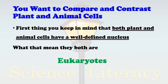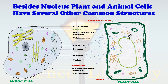Now, when comparing plant and animal cells, the first thing to keep in mind is that both plant and animal cells have a well-defined nucleus, which means they are both eukaryotic organisms. Here you can see two cells — one is an animal cell and the other is a plant cell. Both share a well-defined nucleus as well as several other common and specific structures.